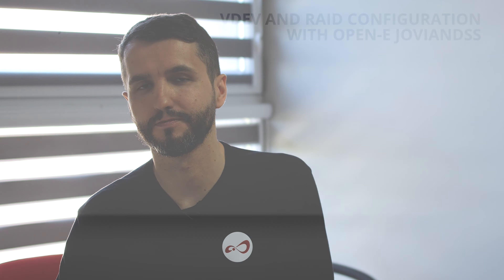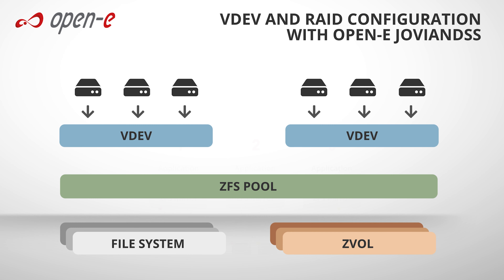To get a nice idea of how ZFS data is structured, let's have a look at the sample model. VDEVs can be understood as virtual disks created from several physical disks connected together. In ZFS-based systems like OpenEdge and DSS, VDEVs are striped and connected together creating a ZPOOL.